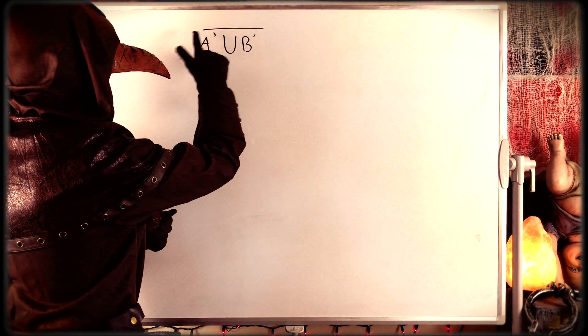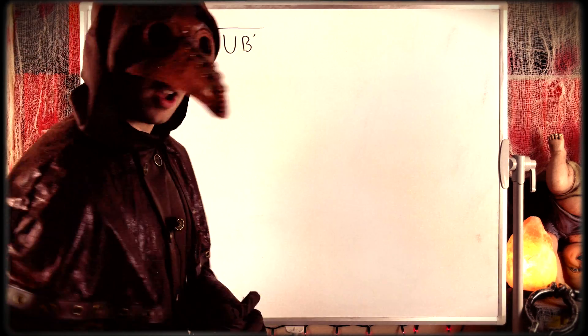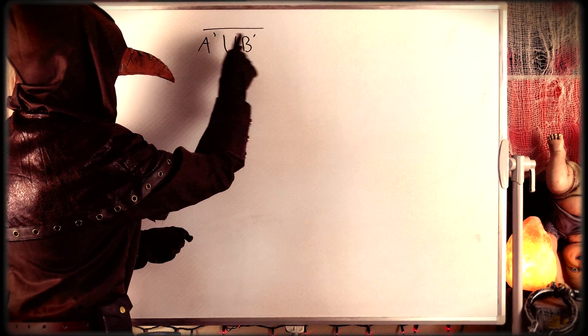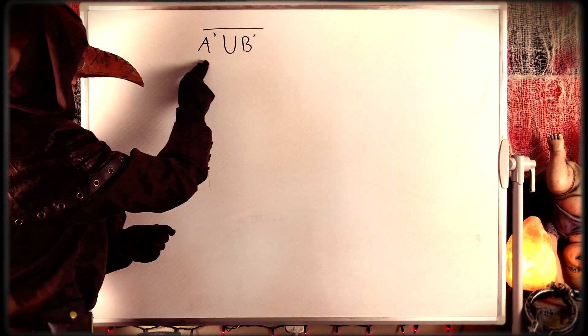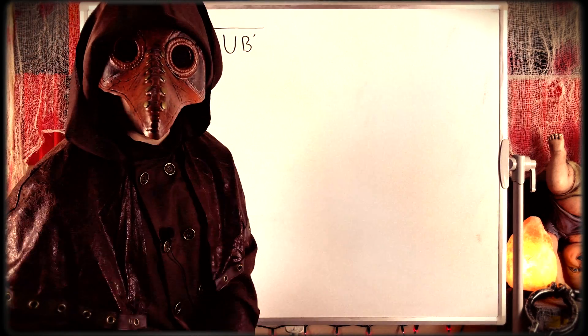So just to be clear about the notation we're using, this bar is a complement operation, and so are these apostrophes with the A prime and the B prime. That's A complement and B complement.